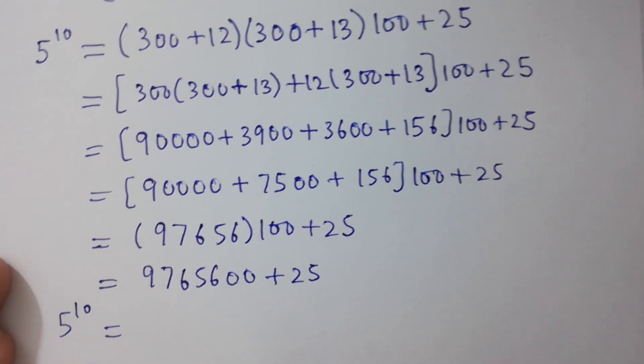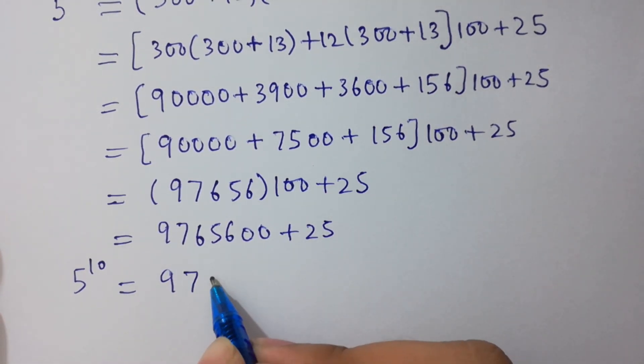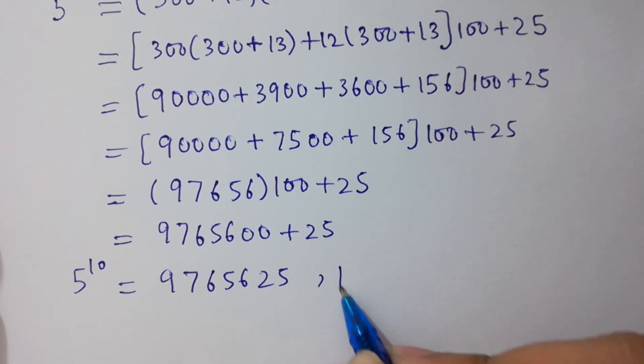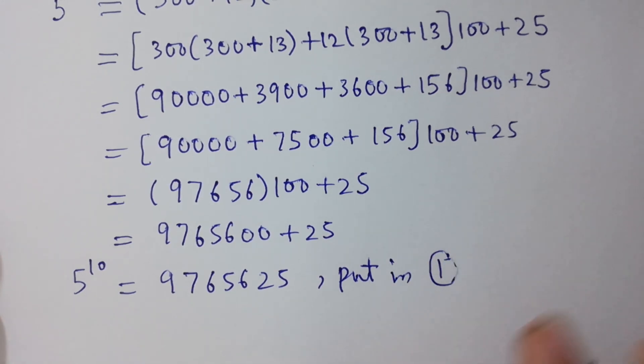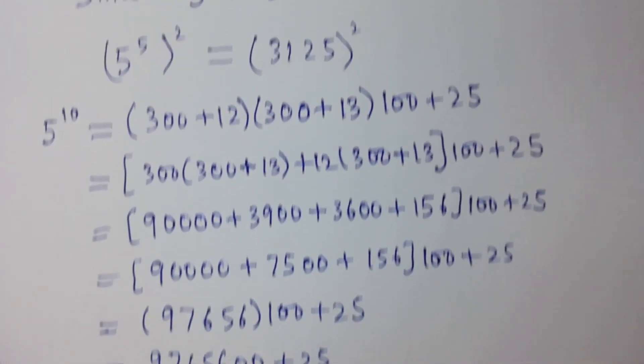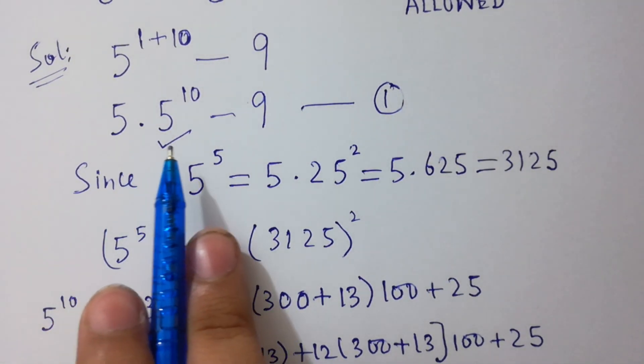And by adding them, 5 to the power 10 equals 9,765,625. Put 5 to the power 10 in equation 1, which is 5 times 5 to the power 10 minus 9.